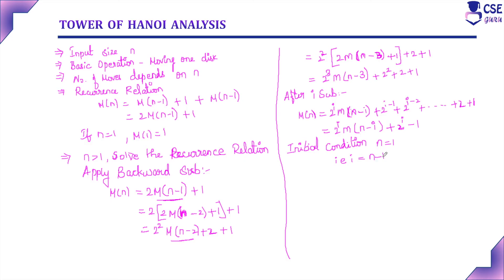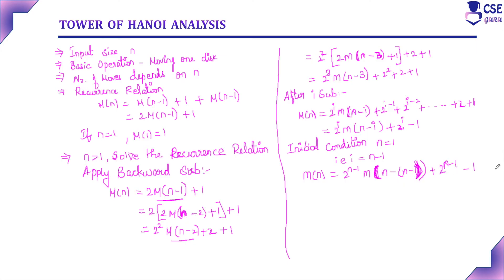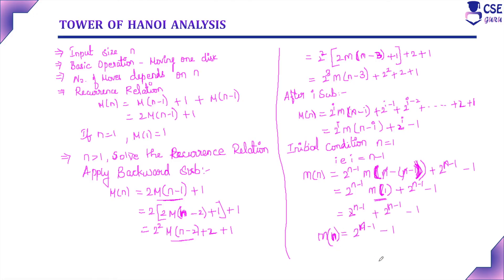Replacing I with N-1 in the recurrence relation: M(N) = 2^(N-1) · M(N-(N-1)) + 2^(N-1) - 1 = 2^(N-1) · M(1) + 2^(N-1) - 1. Finally, we get M(N) = 2^N - 1. This is the time complexity to solve the Tower of Hanoi puzzle. We will get exponential running time even for average values of N. These types of algorithms are very difficult to prove their efficiency, as running time grows very fast even for smaller values of N.